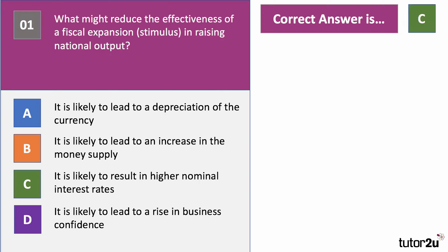The answer to question one is C — it's likely to cause higher nominal interest rates. Options A, B, and D would all amplify the effect of a fiscal expansion: a weaker currency makes exports more competitive, an increase in the supply of money and credit, and rising business confidence all exaggerate the stimulus. C is an offsetting factor — if the central bank raises interest rates due to fears of inflation, that dampens aggregate demand.